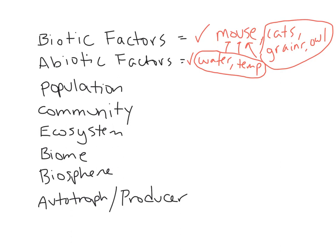Remember, a population is the total number of one species in an area. So the population of Tulare is 60,000 — but it's 60,000 people. That is not including the dogs, the cats, the birds. It is only people, and that's what makes it a population: the total number of one species in an area.